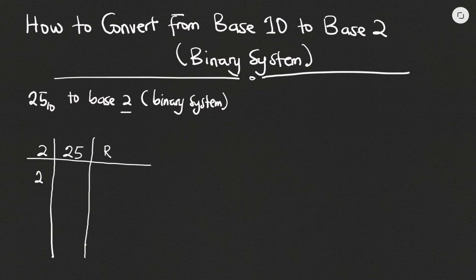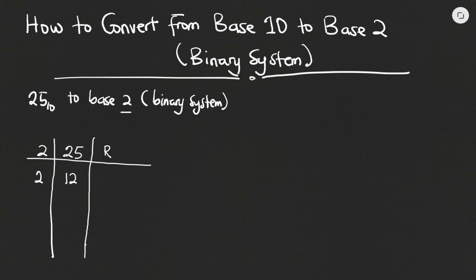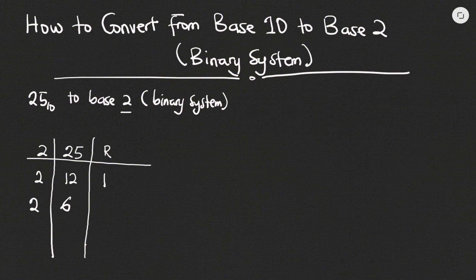So I write down 2 here first. How many times would 2 go into 25? It will go 12 times, and 12 times 2 is 24, which is less than 25, so we need one more to get to 25 — remainder is 1. We repeat the process: how many times would 2 go into 12? It will go 6 times, which is exactly 12, so we are left with 0.